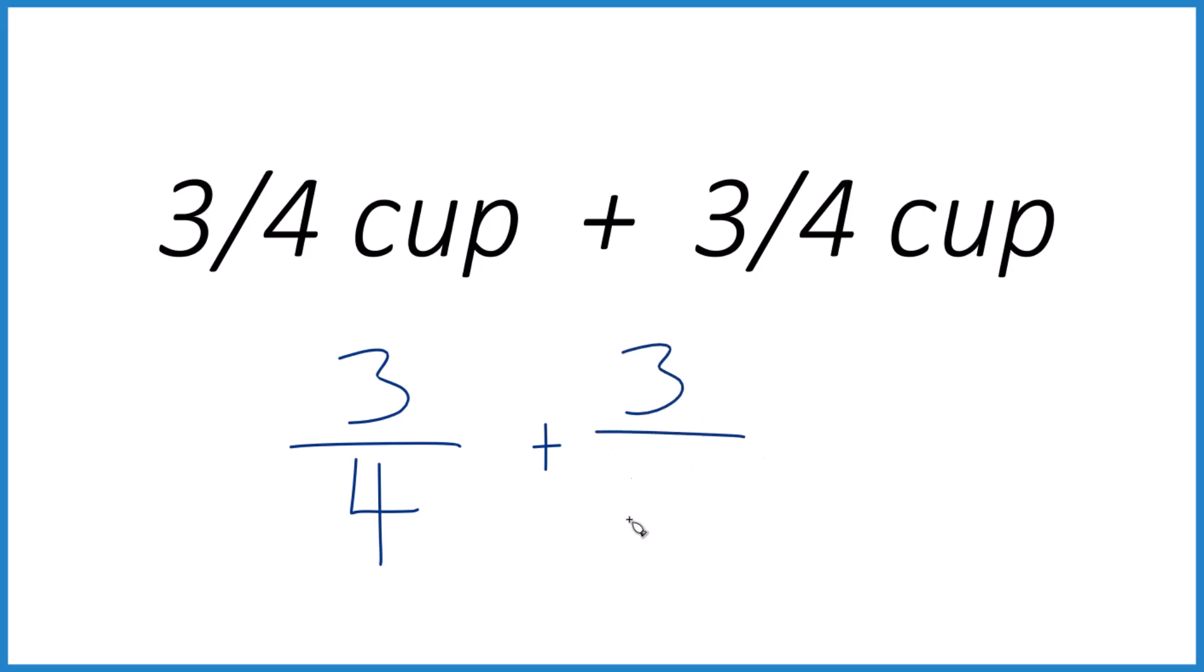And when you add fractions, what you want is if the denominators here are the same, you just add the numerators and bring the denominator across. So we have 3 plus 3 is 6, and 4, since it's the same, we just keep it as 4.